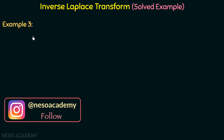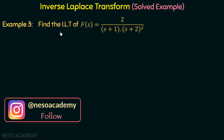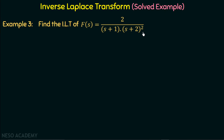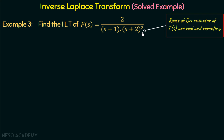The example is: find the inverse Laplace transform of f equal to 2 over (s+1)(s+2) whole squared. We can observe in this particular case that the roots of the denominator of f are real and repeating. This is Case 2 of partial fractions, and we will solve it by splitting these two terms as two different fractions.